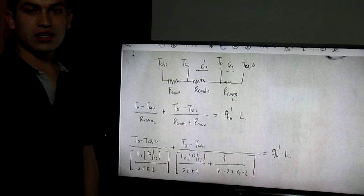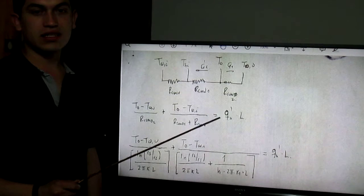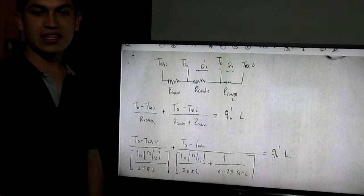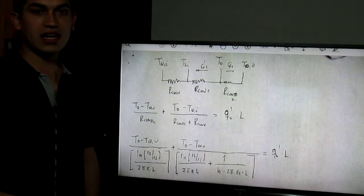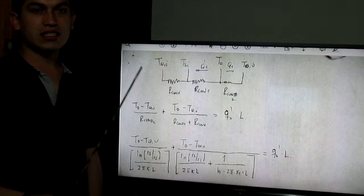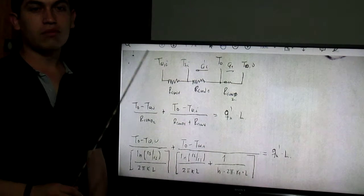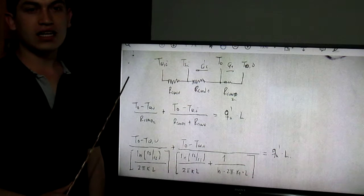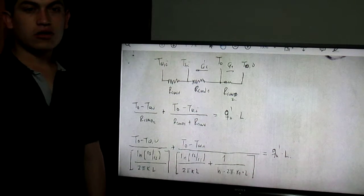The resistance of the heater and the interface contact between the heater and the materials A and B are negligible. Liquid at temperature T is pumped through the tube and provides a convection coefficient at the inner surface radius R1 of the composite.